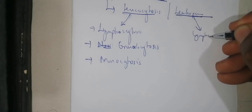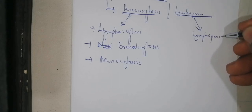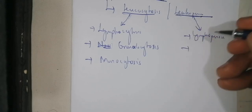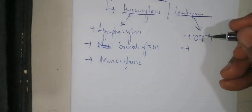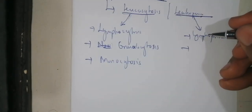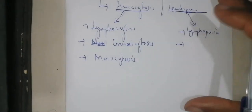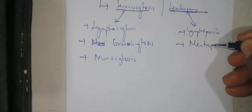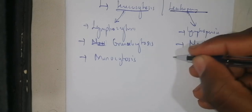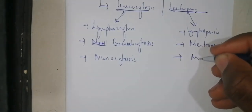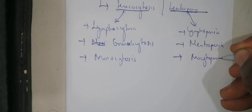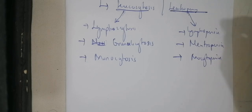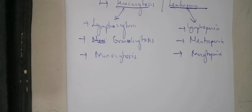For leukopenia, it can also involve the lymphocytes being low, which is called lymphopenia. When granulocytes are low, it is generally called neutropenia. And when monocytes are low, it is called monocytopenia. Those are the different elements you have to keep in mind.